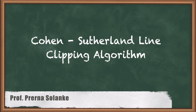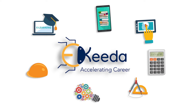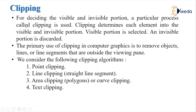Today, we are going to learn about the Cohen-Sutherland Line Clipping Algorithm. Clipping is deciding the visible and invisible portion of a particular process. Clipping determines each element into the visible and non-visible portion. The visible portion is selected and the invisible portion is discarded. The primary use of clipping in computer graphics is to remove object lines or line segments that are outside the viewing pane — whatever is inside the window we keep, and whatever is outside we clip.